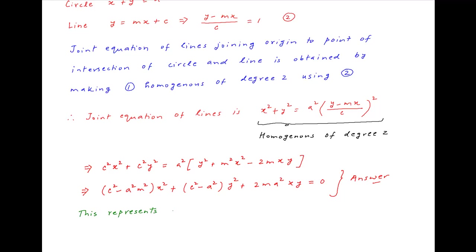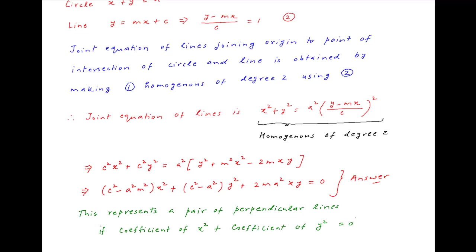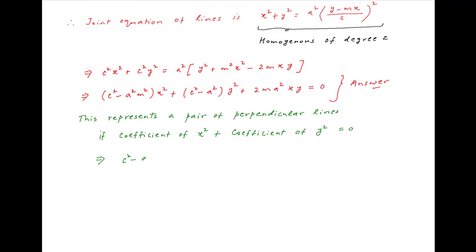This represents a pair of perpendicular lines if the coefficient of x² plus the coefficient of y² is equal to 0, which means (c² - a²m²) + (c² - a²) = 0. This implies that 2c² = a²(1 + m²), and this is the required result.